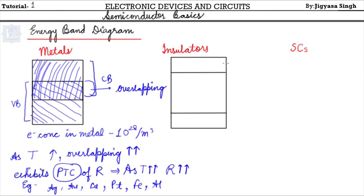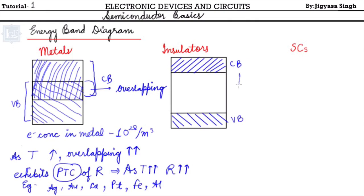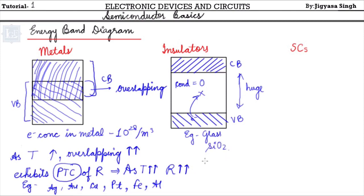In insulators, the type of bonding is ionic and conductivity is almost zero. The difference between the conduction band and valence band is huge, so electrons in the valence band cannot jump to the conduction band, resulting in zero conductivity. Examples are glass, SiO₂, wood, and plastic.